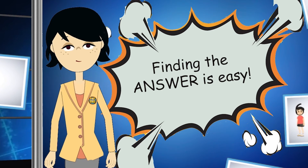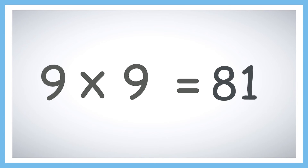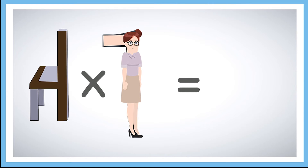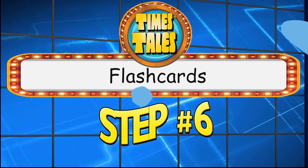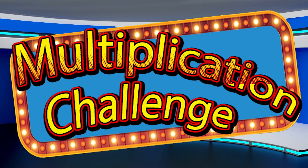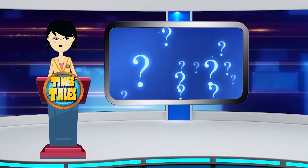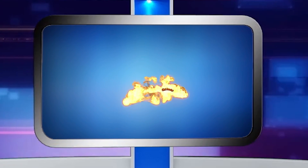Now it's your turn to try the flashcards. When you hear this sound, pause the video and say the answer out loud, then hit play and see if you got it right. Remember, all you have to do is think of the story that goes with the two characters in the flashcard — the answer is hiding in the story. Let's begin. 9 times 9 — 81. 4 times 7 — 28. Now let's try the flashcards without the symbols. When the flashcards come up, see if you can answer before the time runs out. Get ready!